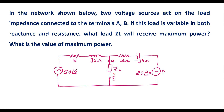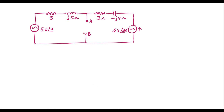In the maximum power transfer theorem, the first step is we have to remove the load impedance from the circuit. So first, remove ZL from the circuit so that the terminals A and B will become open, and then find the current in the circuit. So let me remove ZL from the circuit. The circuit looks like this — there was a ZL that I have removed.